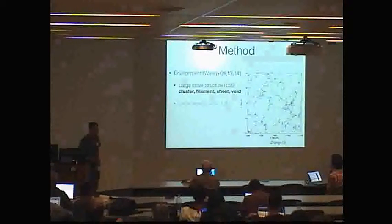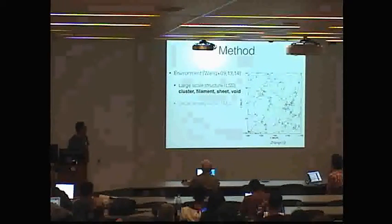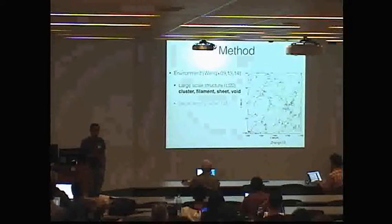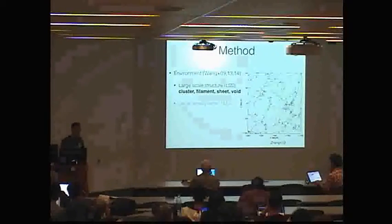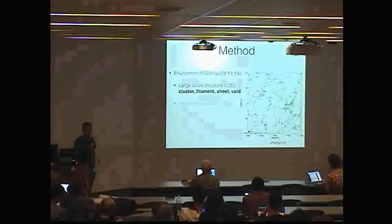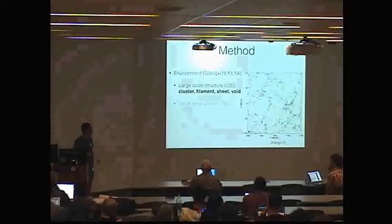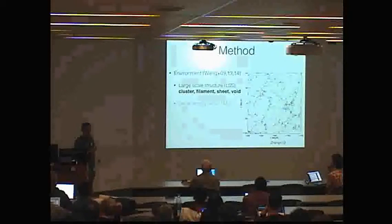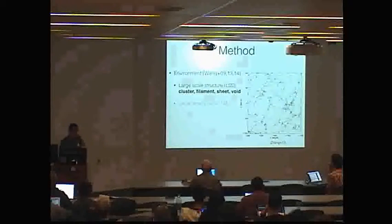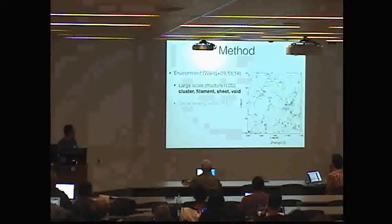Here I'll tell you a little bit about the method. So first I'll tell you the environments I used. First we match the manga galaxies into a group catalog. Then we use that catalog to construct a mass density field and use the mass density field and the tidal field to derive large scale structures. So we classify the galaxies into clusters, filaments, sheets and voids. This is one example of the classification. We also measure local density around the galaxy, so I will not be talking about that in this talk, but we studied this in the paper.